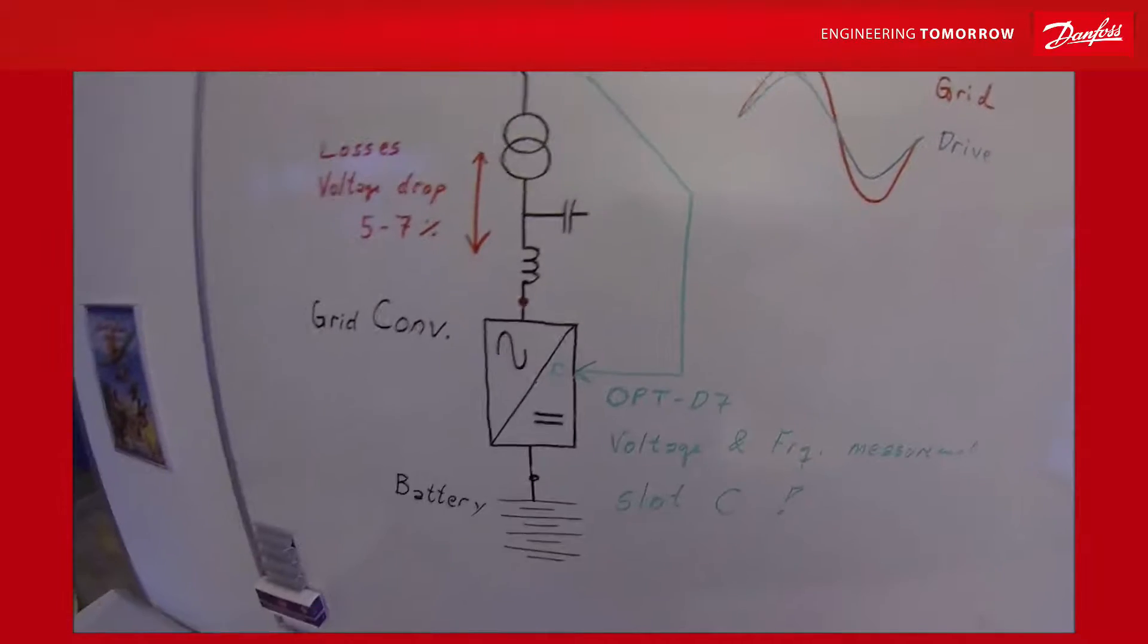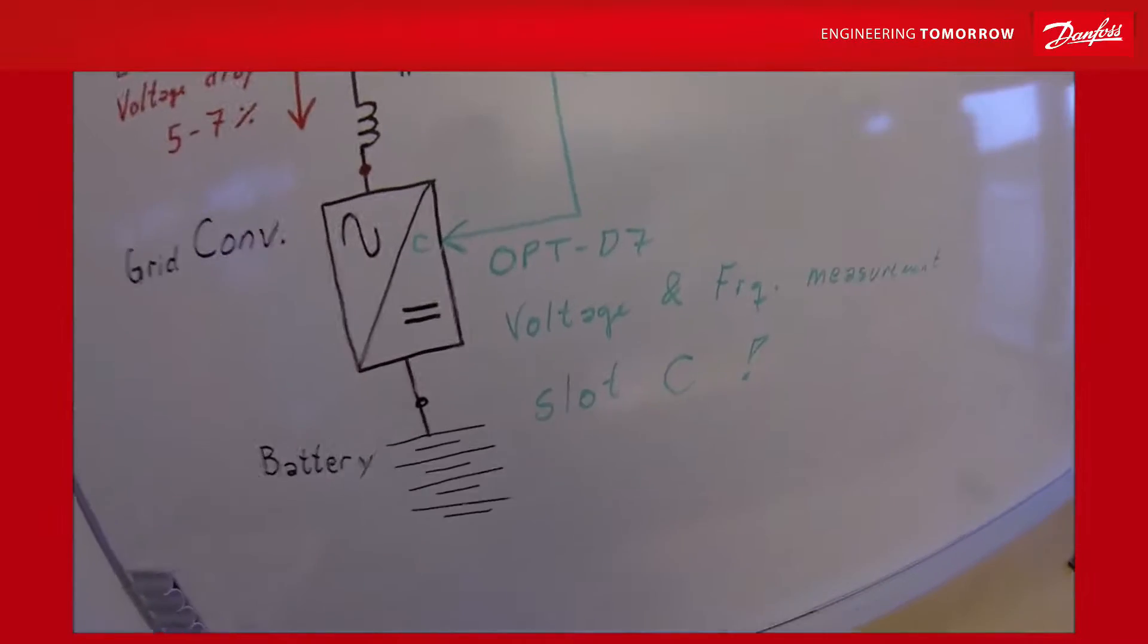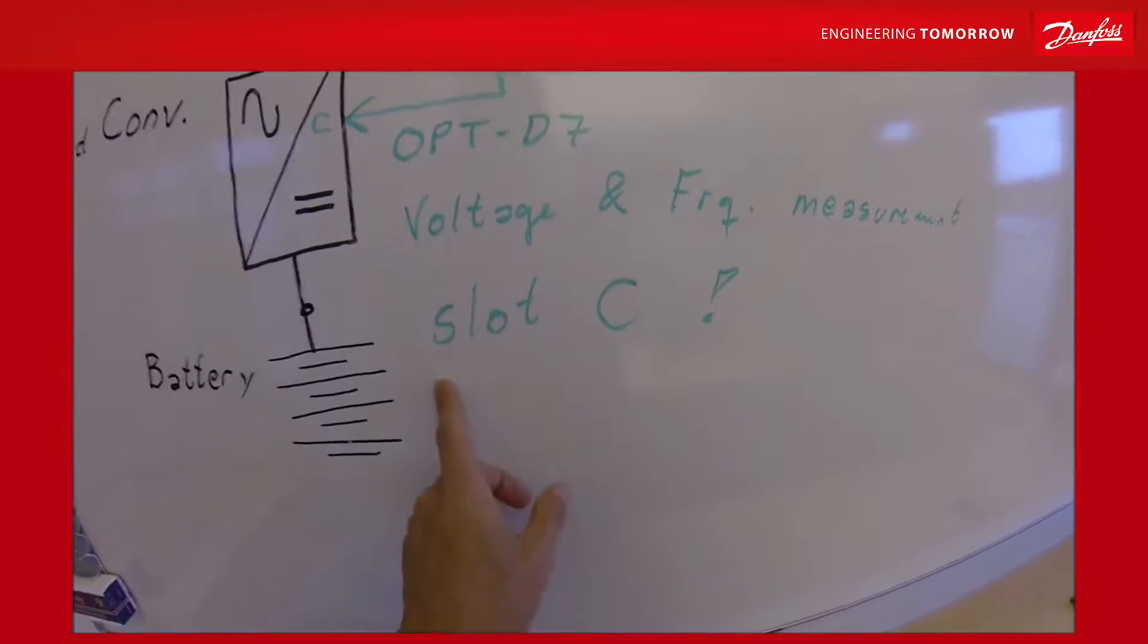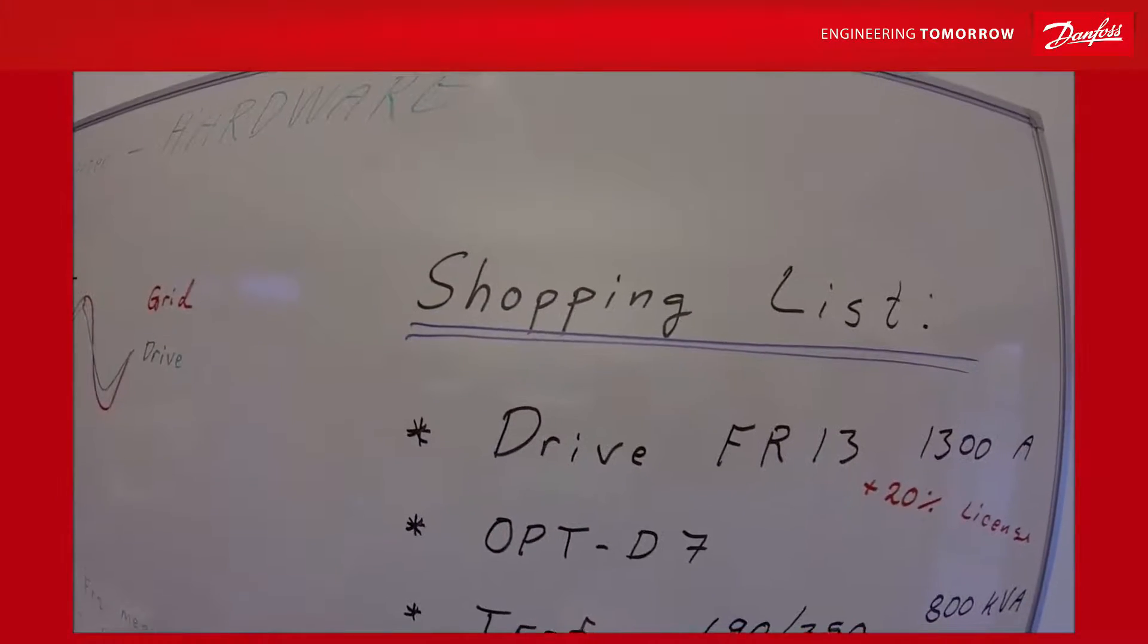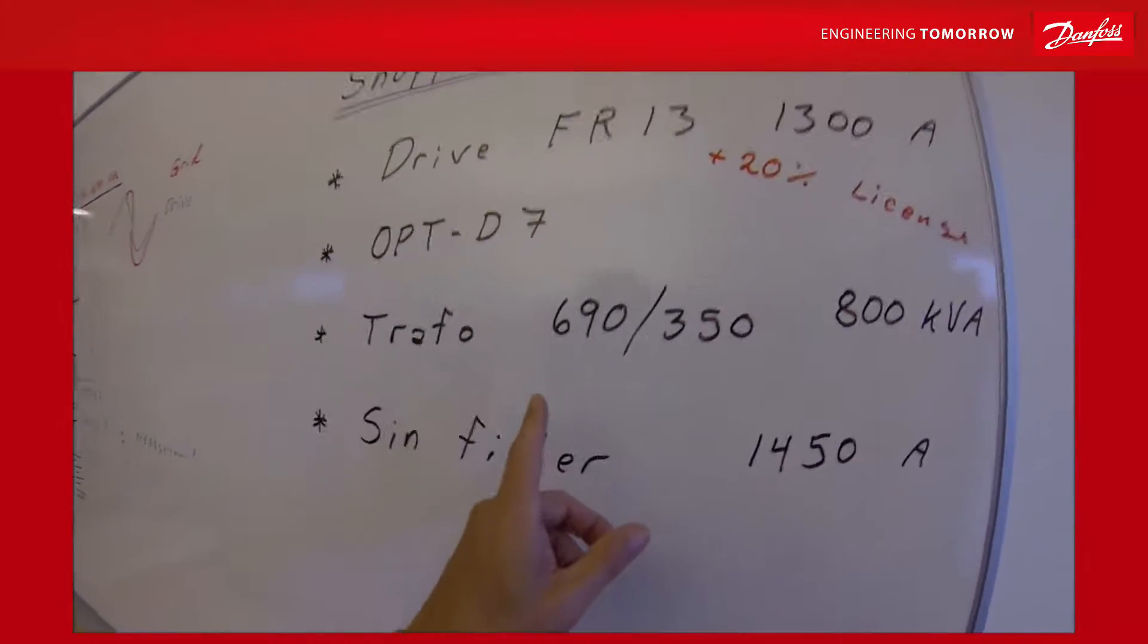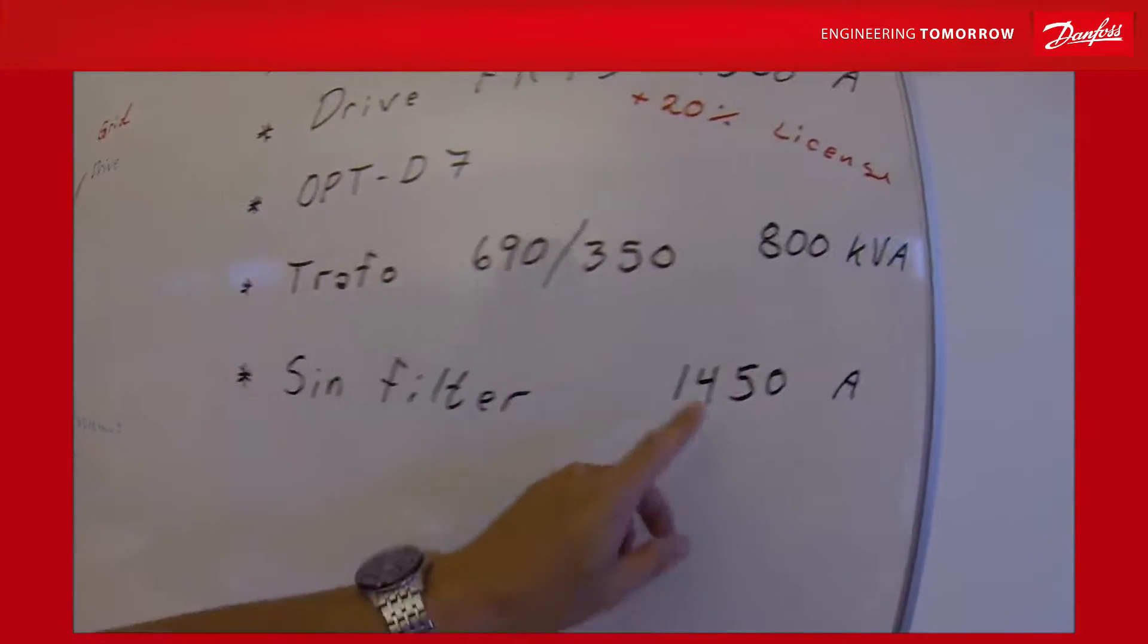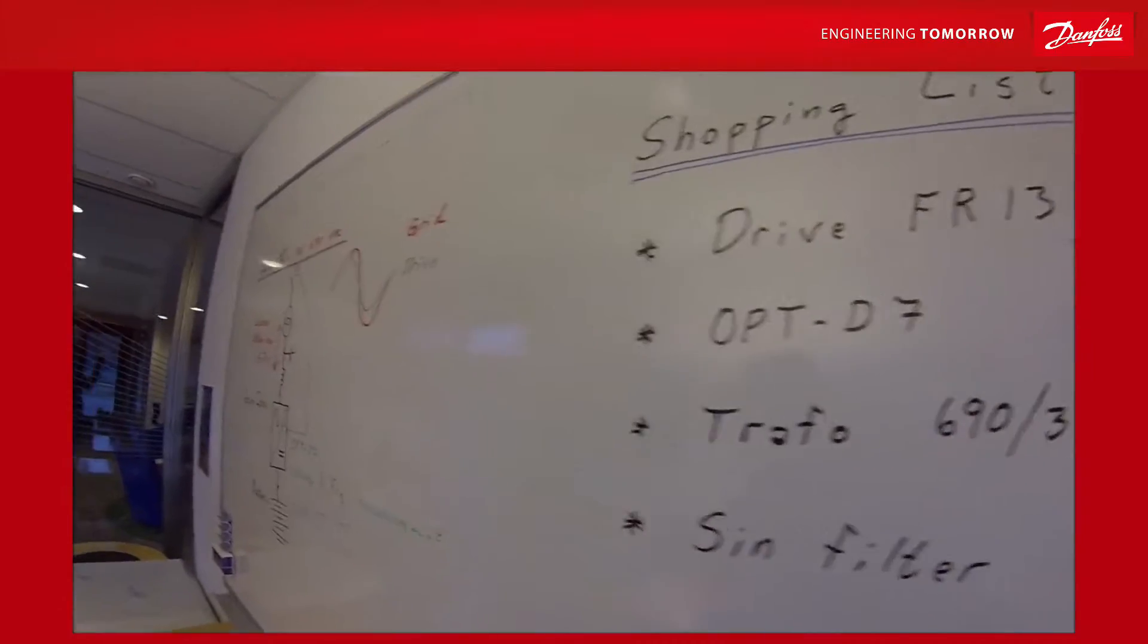Remember that in the drive you have to install the option board, the D7 board, and this can only be installed in slot C, which is the high speed measurement slot. The customer shopping list will then be our drive frame 13, 1300 ampere, plus the 20 percent license, the optional board D7, and the transformer should be 690 to 350, 800 kilovolt ampere, and a sine filter which goes to this drive, which is a 1450 ampere sine filter. That should be about what you need to make this drive. Thank you for watching.